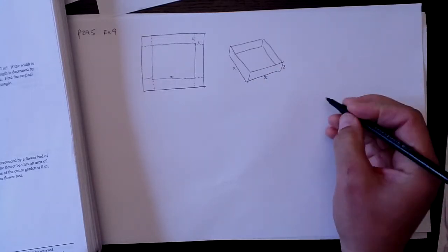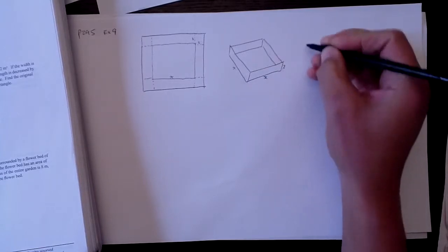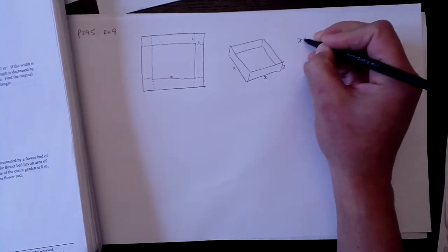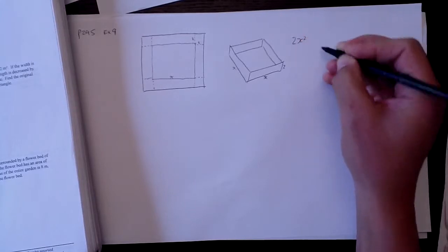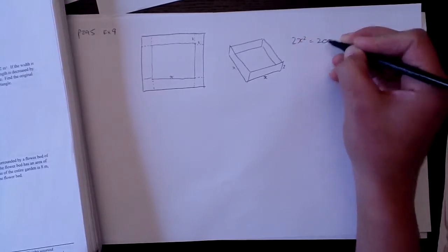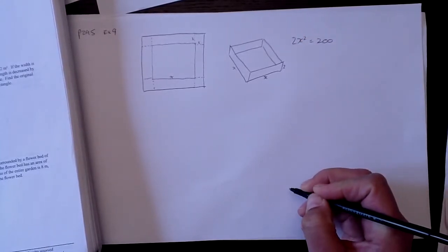So it said that the volume was going to be 200, so x times x times 2 equals 200. In other words, x squared, 2x squared equals 200. That's all it's saying.